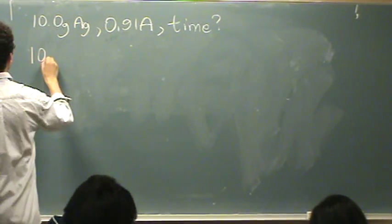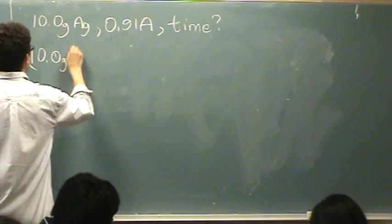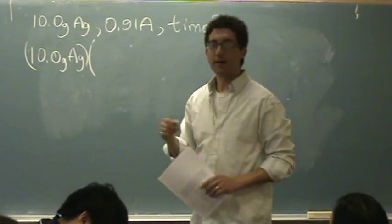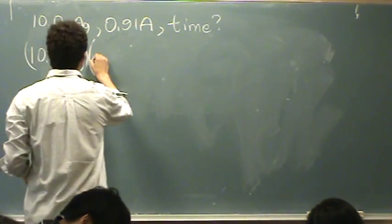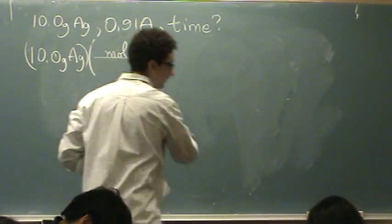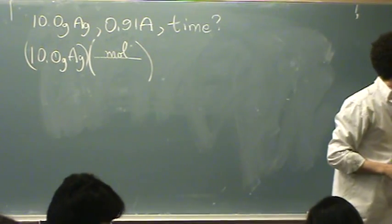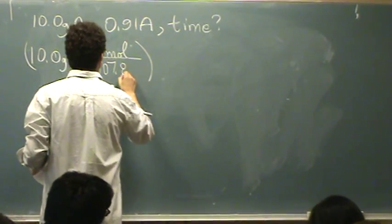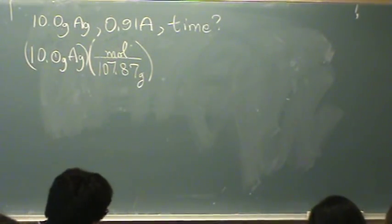I want to start with the grams though. Grams of silver. This is how I can purely calculate through. Let's change this to moles. And let me see if I have a periodic table here and good eyes. 107.87. Now we've got moles. That's moles of silver.